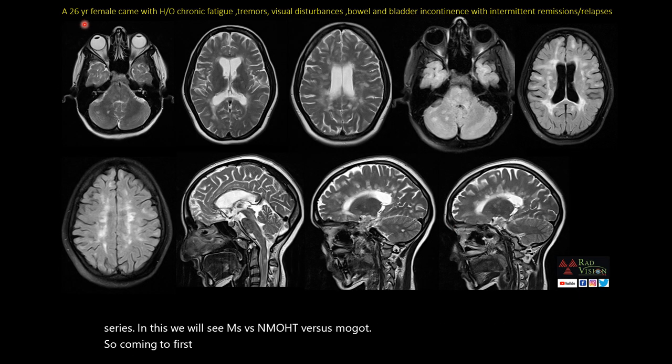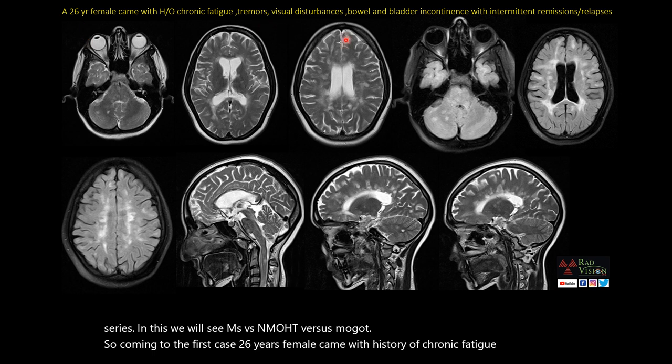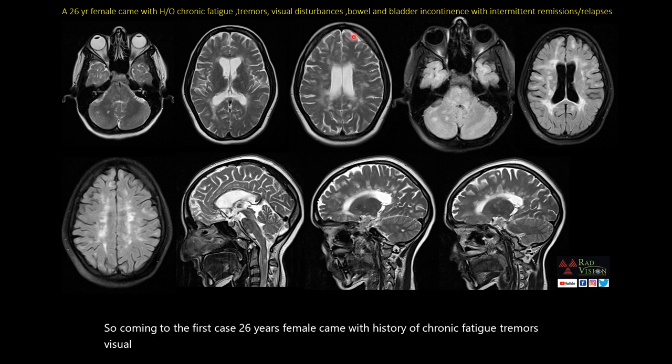Coming to the first case: a 26-year-old female came with history of chronic fatigue, tremors, visual disturbances, bowel and bladder incontinence, and even intermittent remissions and relapses.